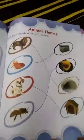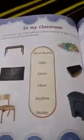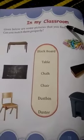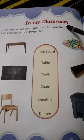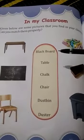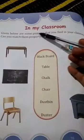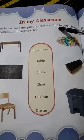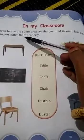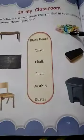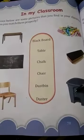Next, page number 78 children. Here is 'In My Classroom.' We have to know what is in your classroom and identify which things are there. Given below are some pictures that you have to find in your classroom. Can you match them properly children? Here is a table, blackboard, chair, chalk, duster, and dustbin.